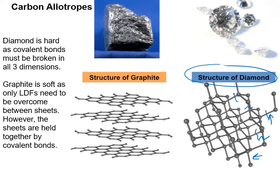Graphite is another type of carbon solid. It's very soft and slippery because we have covalent bonds within the sheets, but between the sheets there are only London dispersion forces attracting them together. So you can slide between the sheets but the sheets themselves remain intact.